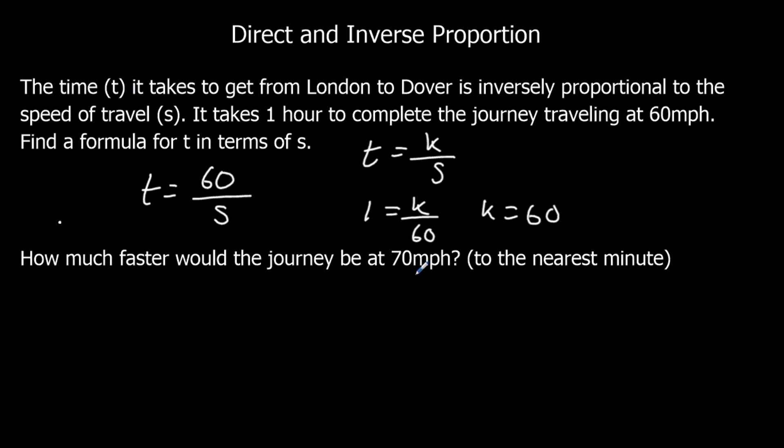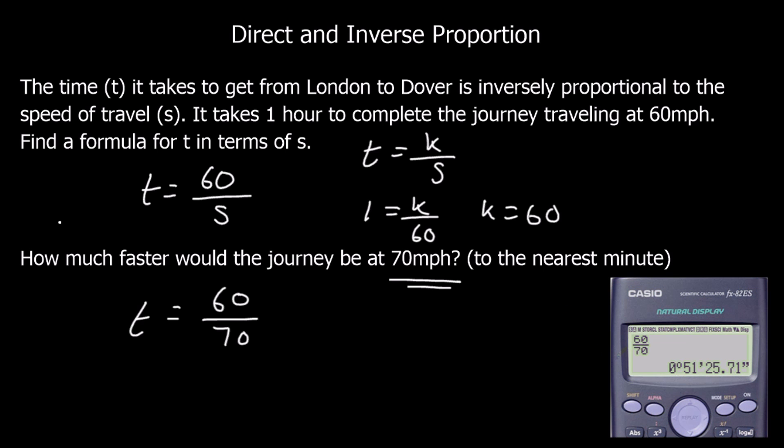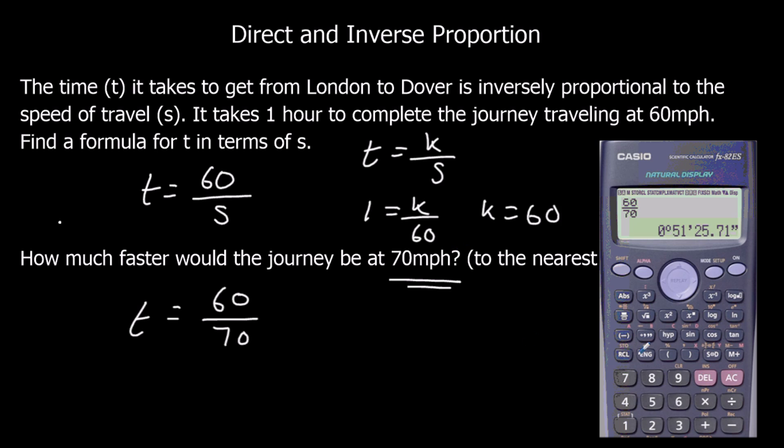If the journey was at 70 miles an hour, that's s. So I've got t equals 60 over 70. I'm going to use a calculator. I put 60 over 70, that gave me a decimal. And then this is the time button on the calculator. Press that and it converts it to time. So that's 51 minutes, 26 seconds. To the nearest minute, that's 51 minutes. And it was 60, so 9 minutes faster.